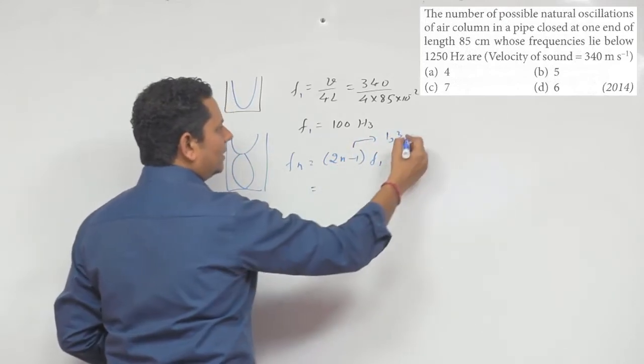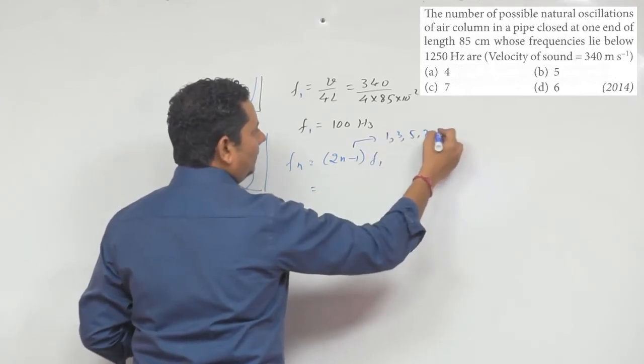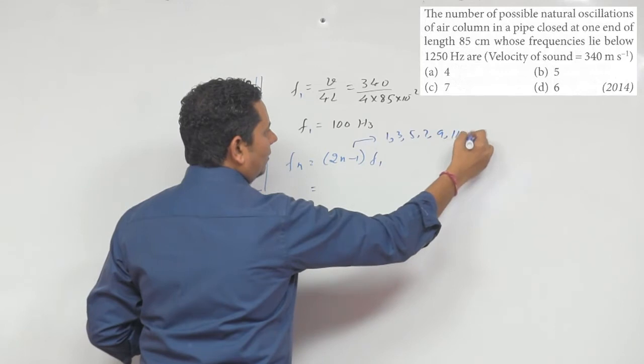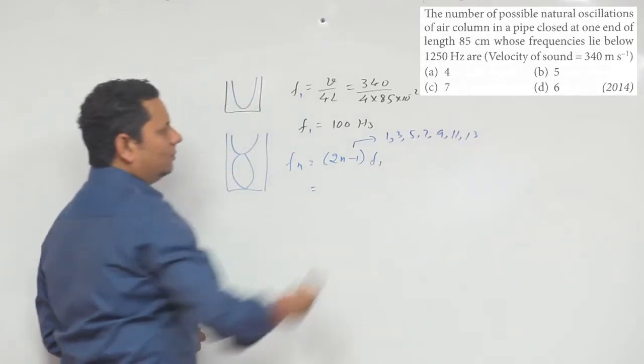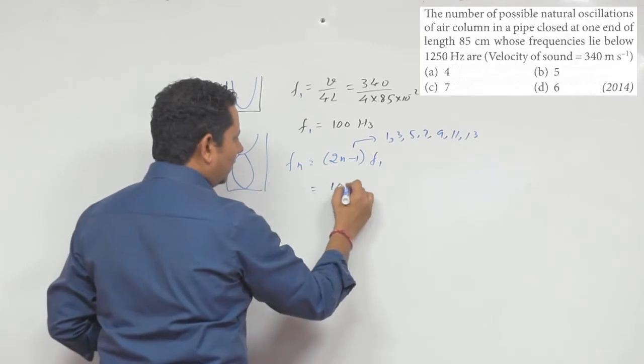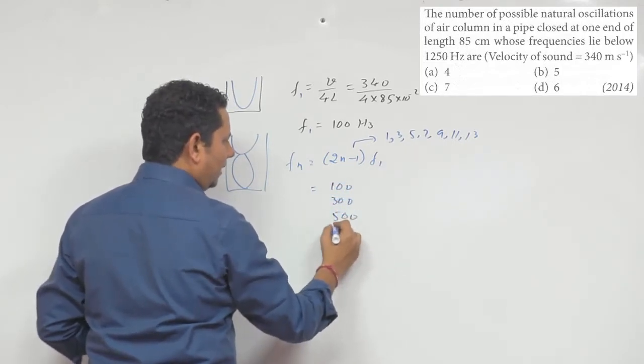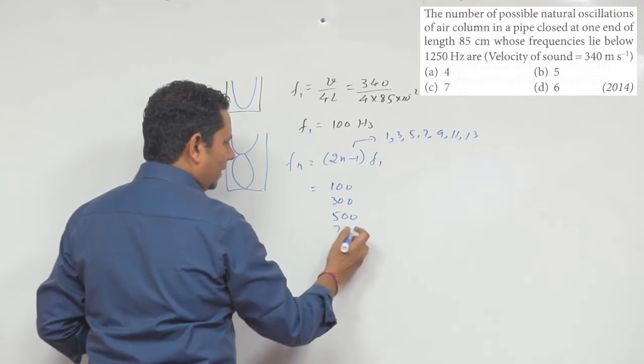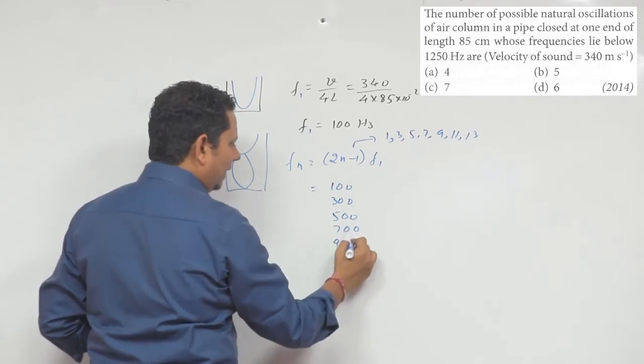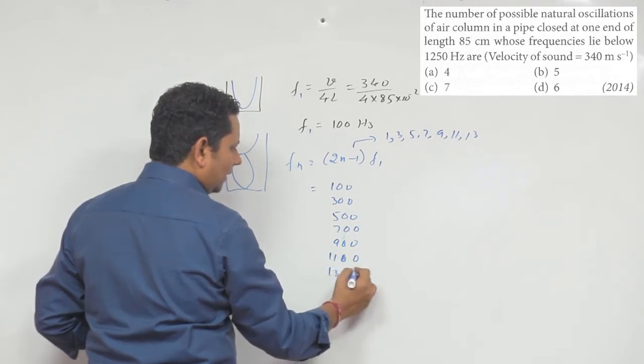This means that 2N-1 will be 1, 3, 5, then the value will be 7, then 9, 11, 13. So this means that the frequency will be 100, or 300, or 500, or 700, or 900, or 1100, or 1300.